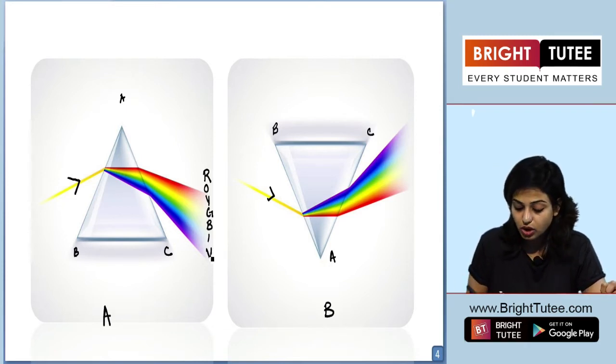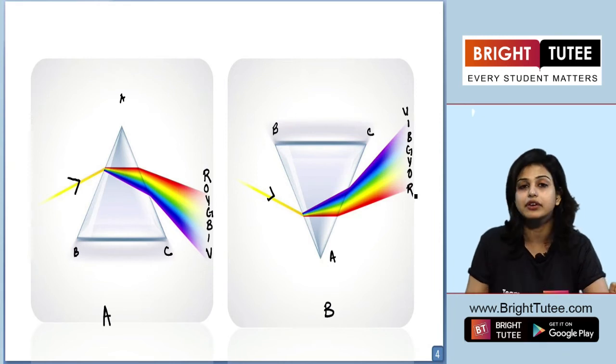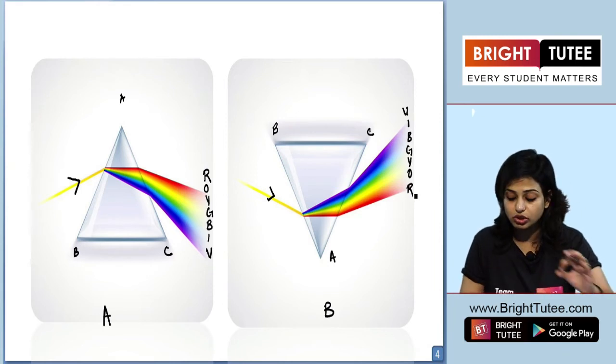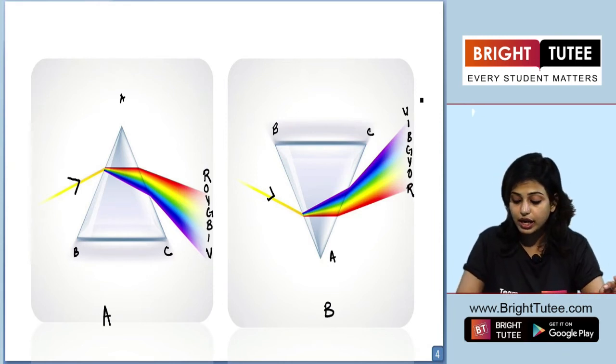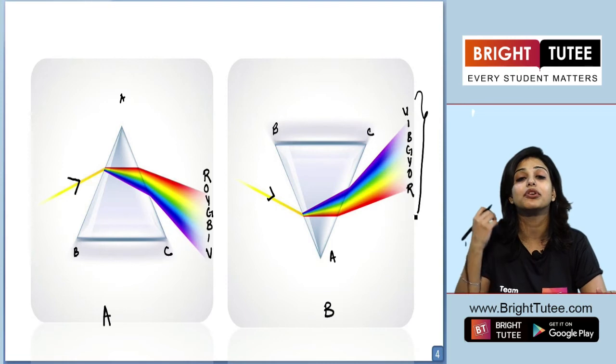On the other hand, when you consider the B image, what is happening students? When the white light is falling on the edge, you are getting violet on the above, then indigo, then blue, then green, then yellow, then orange, and then red. That means you are forming VIBGYOR in this pattern when and only when your prism is in the downright position.